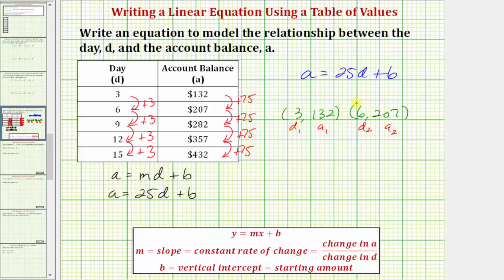So performing substitution, we'd have the equation 132 equals 25 times D, which is three, plus B.